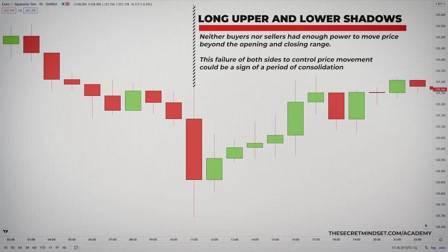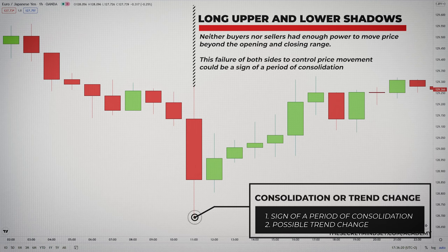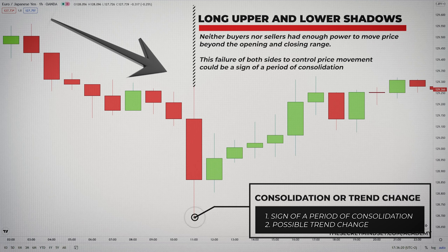One of the most interesting signals is an exceptionally long shadow appearing on both sides of the real body. When such shadows are found in both the upper and lower ends in comparison to the real body, it shows that neither buyers nor sellers had enough power to move price beyond the opening and closing range. This failure of both sides to control price movement could be a sign of a period of consolidation. When a candlestick is up with long shadows on both sides and a current trend has been underway, it can signal the end of that trend even though both sides were unable to create more movement. In general, long shadows, both above and below the real body, may be better understood in a multiple time frame analysis.